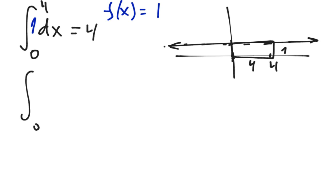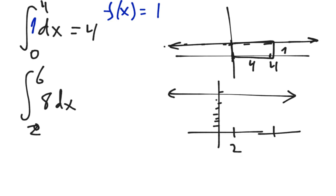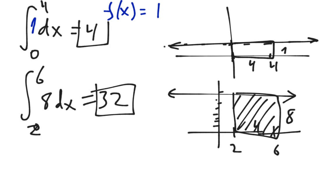Here's another one, we could go from 2 to 6 of 8 dx. Same idea, our picture here will be y equals 8, so 1, 2, 3, 4, 5, 6, 7, 8. And we're going to go from 2 to 6. And guess what? This is another rectangle. So this length is 4, this is 8, and so the area under this curve is just 32. Sometimes integrals are really easy because they're easy geometric shapes, and that's the point of this video is to show you that sometimes integrals are just easy geometric shapes.